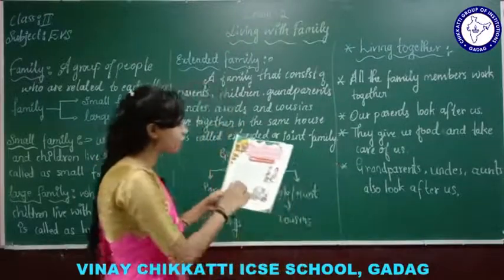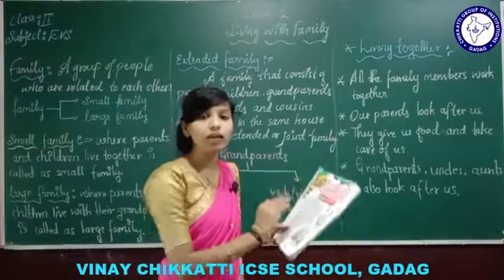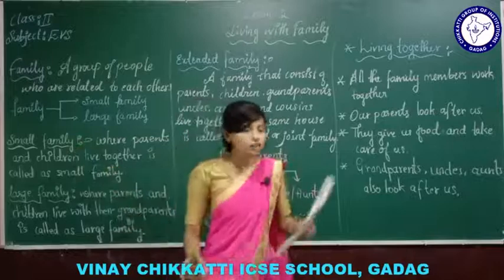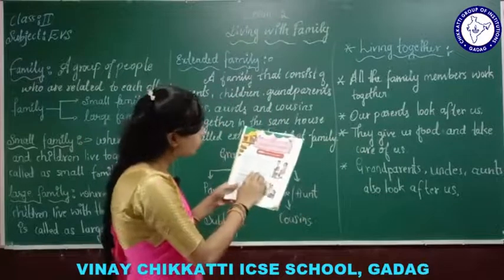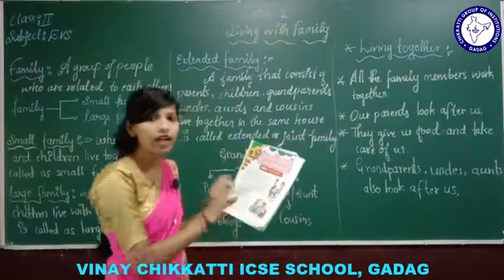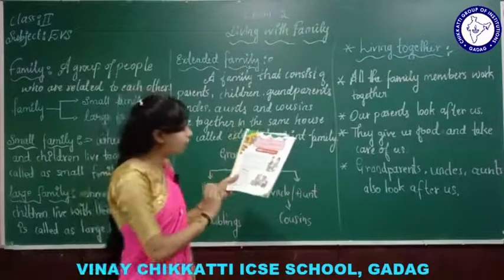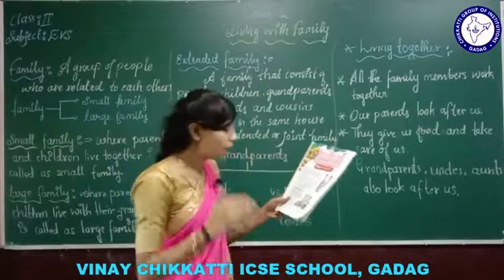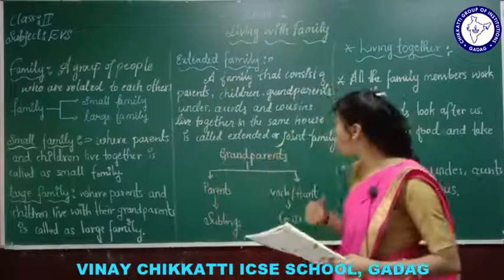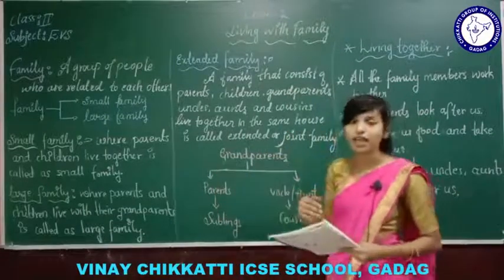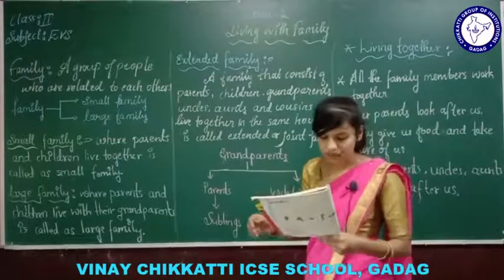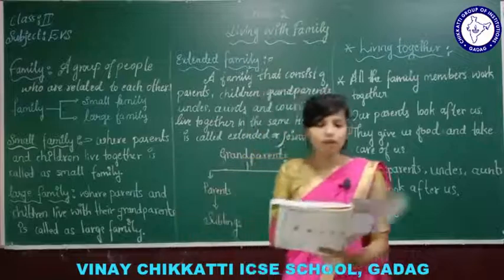In your textbook also they have given: nuclear family is nothing but a small family. Large family is one in which children and parents live together with their grandparents. Extended family means apart from our parents, grandparents, and siblings, there are many other people like uncle, aunt, and cousins who may also live with us.